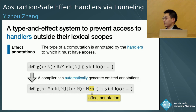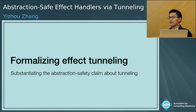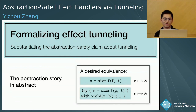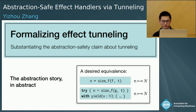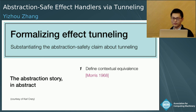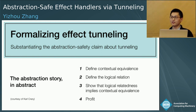Having shown how to make effect handlers both type safe and abstraction safe, we now want to formalize what we have achieved. In addition to proving type safety, we want to substantiate the claim that tunneling is good for abstraction. Abstraction safety is about having desired equivalences hold — for instance, we want to show that the two clients of size_F are equivalent under the new tunneling semantics. The gold standard for equivalence is contextual equivalence: two terms are contextually related if they cannot be distinguished in any program context. We take a standard approach — defining a logical relation for a core language, showing that contextual equivalence and the logical relation coincide, and then showing two terms are equivalent by showing they are logically related.